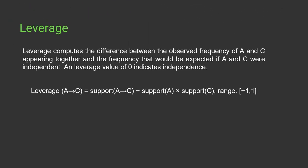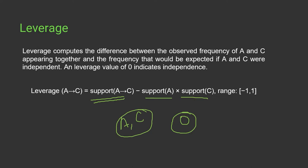Then we have leverage. Leverage computes the difference between the frequency of A and C appearing together and the frequency that they would appear independent of each other. It calculates: support of A and C minus support of A times support of C. If we get a value of zero, that means these two products have no relation between them — they are independent of each other.